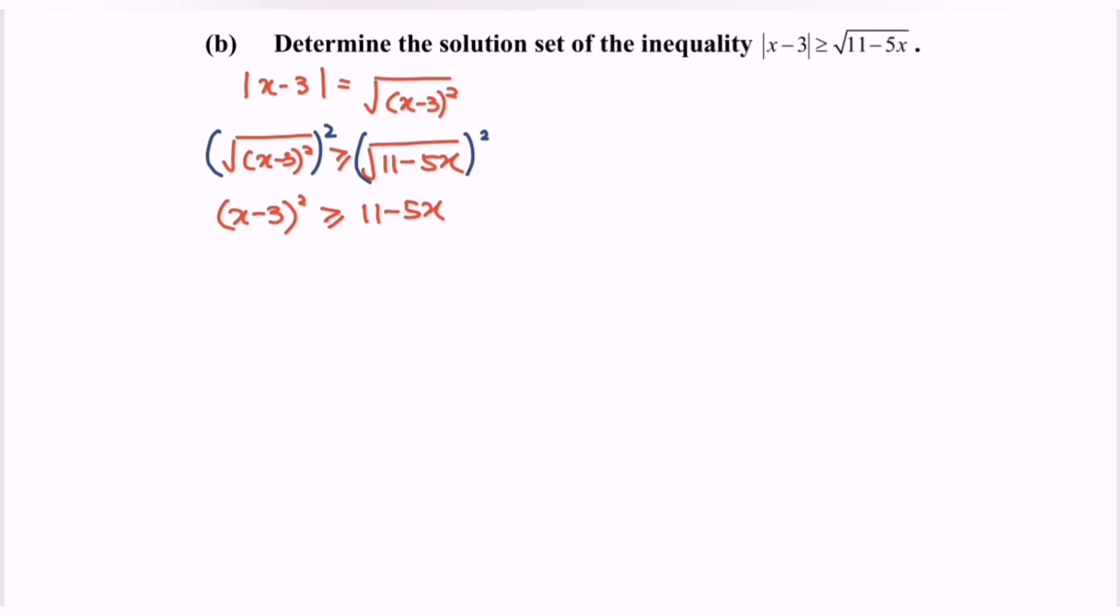Expand the situation then rearrange. So we will have x squared minus 6x plus 9 plus 5x minus 11 greater than or equal to 0.